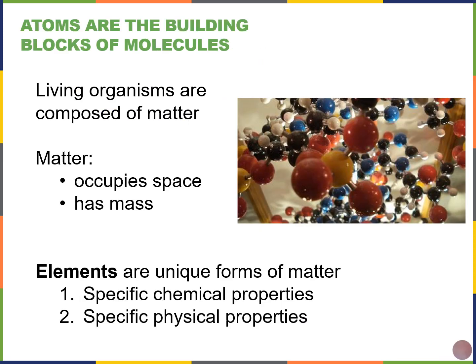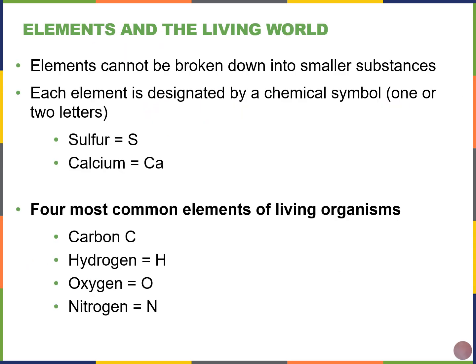All life, all living things are composed of matter, and matter is anything that takes up space and has mass. Elements are types of matter that have specific chemical and physical properties. Elements can't be broken down into smaller substances, and we usually use chemical symbols to represent each element. For example, we use S to represent sulfur, and Ca to represent calcium.